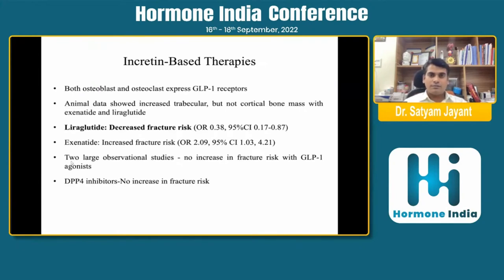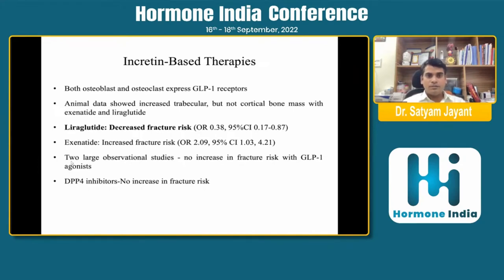Turning to incretin-based therapy: both osteoclasts and osteoblasts express the GLP-1 receptor. Animal data shows increased trabecular but not cortical bone mass with exenatide and liraglutide. Liraglutide decreases fracture risk with an odds ratio of 0.38, significantly reducing risk, while risk is slightly increased with exenatide. Two large observational studies showed no increased risk with GLP-1 agonists, and DPP-4 inhibitors show no increased fracture risk in type 2 diabetic patients.